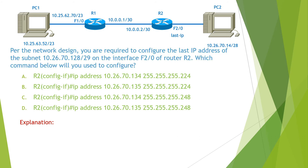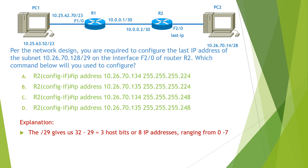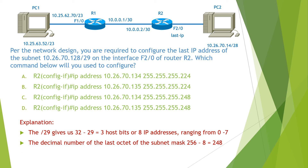The next question reads: per the network design, you are required to configure the last IP address of the subnet 10.26.70.128/29 on the interface F20 of router 2. Which command will you use to configure? To answer this, the slash 29 gives us 3 host bits or 8 IP addresses ranging from 0 to 7. The decimal number of the last octet of the subnet mask is found by subtracting 8 from 256, which equals 248.